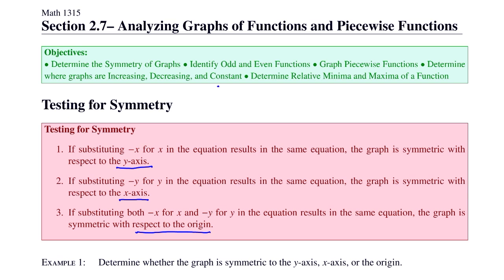Why would we substitute negative x? Because if we have a symmetric graph over the y-axis — like the absolute value graph — then for any point on the right side in the form x comma y, the other point on the left side is negative x comma y. In other words, x and negative x need to give the same result.